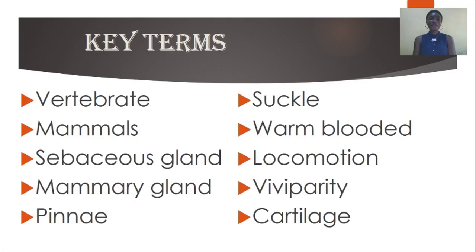Our key terms for this lesson are: vertebrates, mammals, sebaceous gland, mammary gland, pinna, warm-blooded, locomotion, viviparity, and cartilage. By the end of the lesson you should be familiar with and able to explain these key terms.